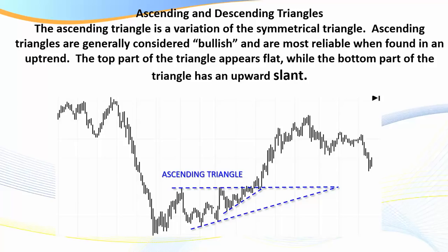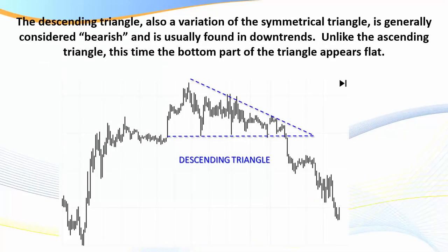The ascending triangle is a variation of a symmetrical triangle. Ascending triangles are generally considered bullish and are most reliable when found in an uptrend. The top part of the triangle appears flat while the bottom part has an upward slant. You can see there are basically two triangles here — a bigger picture and a smaller one forming within it. When you draw a pattern, close enough is good enough — they don't have to be perfect.